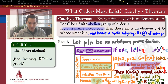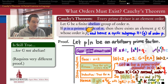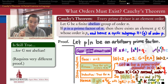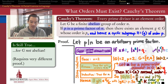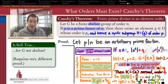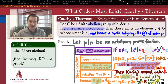It turns out, though, that the abelian hypothesis is not necessary for Cauchy's theorem to be true — Cauchy's theorem holds for all finite groups. Every finite group, given a prime divisor of its order, has an element of that prime order. However, the proof for the general non-abelian case is more involved and requires more theory. A more advanced course in group theory will cover the Sylow theorems, which provide the theoretical underpinnings showing why Cauchy's theorem holds for all finite groups.